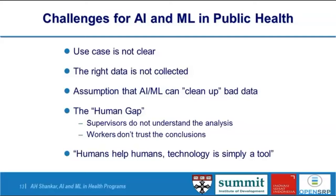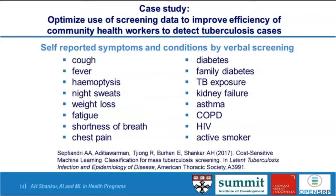I'm going to walk you through a use case. We were doing some work in Indonesia related to active screening for tuberculosis. This involved frontline health workers going to a health clinic and asking other people — not just patients, but persons accompanying a patient, relatives, or workers in the health clinic — if they had various signs or symptoms of tuberculosis. The decision was: are you a suspect TB patient? Should you be referred to a more expensive assessment like using a GeneXpert or an X-ray? This work was done by analyst Ali Septiandri.